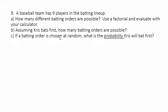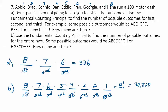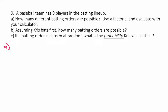The last example brings in some probability. A baseball team has nine players in the batting lineup. How many different batting orders are possible? Use a factorial and evaluate with your calculator. It's the same kind of problem as our race — instead of finishing positions, we're putting players in a batting order. We have nine players to choose from to bat first, then eight for second, all the way down, so it's nine factorial.